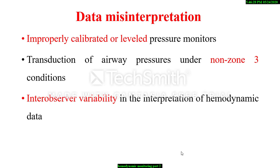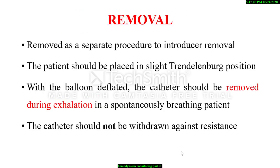Data misinterpretation: pulmonary artery catheter-derived hemodynamic data can be inaccurate or misinterpreted for several reasons, including improperly calibrated or leveled pressure monitors, transduction of airway pressure under non-zone 3 conditions, and inter-observer variability in the interpretation of hemodynamic data.